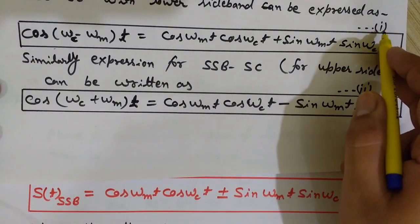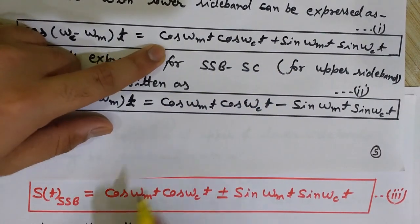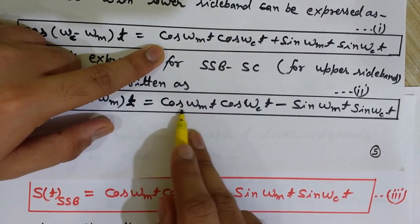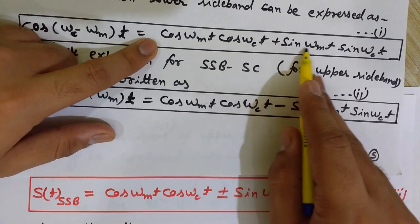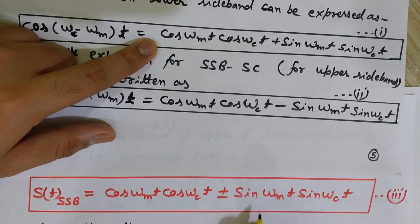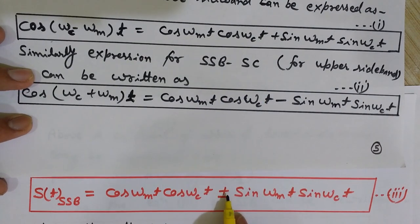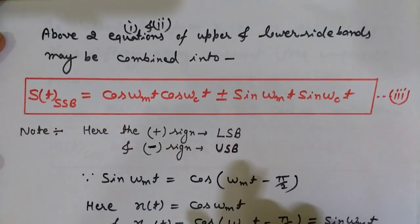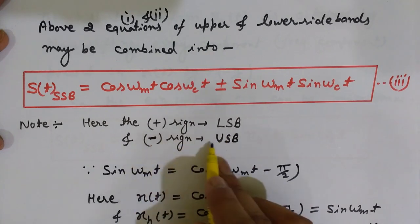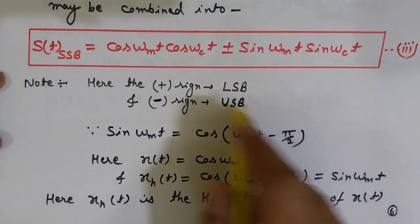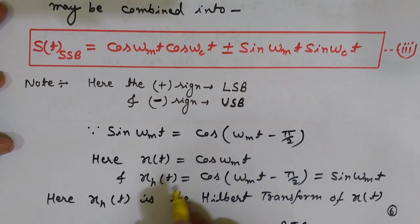These two equations can be combined into one general form. Since the only difference between them is a plus or minus sign, the combined SSB equation is: cos(ωm·t)·cos(ωc·t) ± sin(ωm·t)·sin(ωc·t), where the plus sign corresponds to the lower sideband and the minus sign corresponds to the upper sideband.